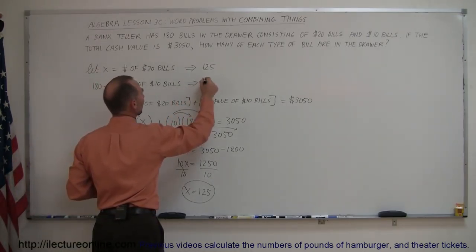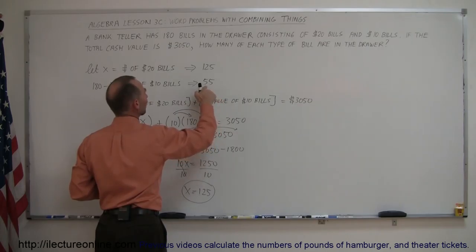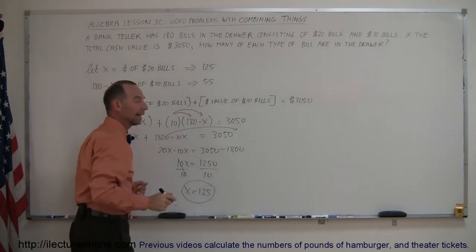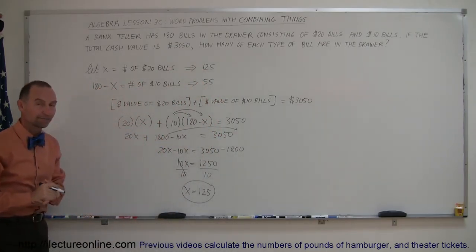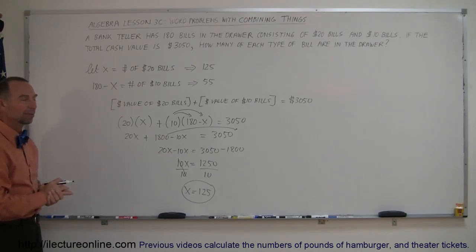Okay, that means there are 55 $10 bills. 55 plus 125 is 180. And that's probably the answer. All right. That's how you do a problem like that.